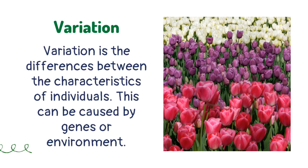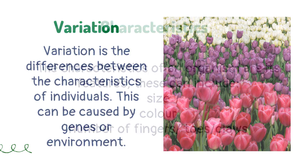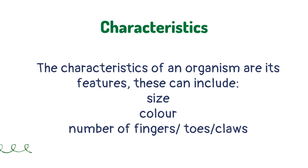Variation is the differences between the characteristics of individuals. This can be caused by genes or environment. The characteristics of an organism are its features; these can include size, color, and number of fingers.